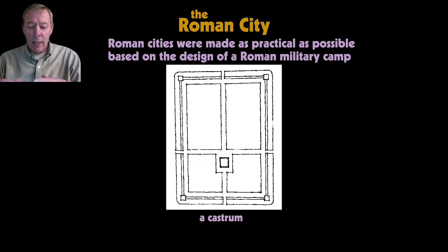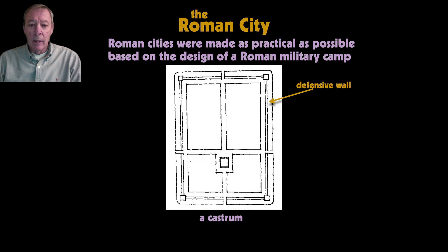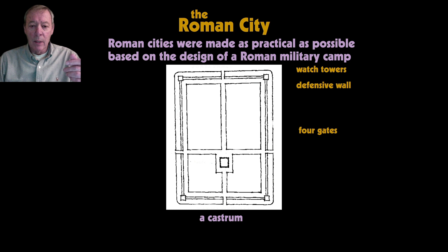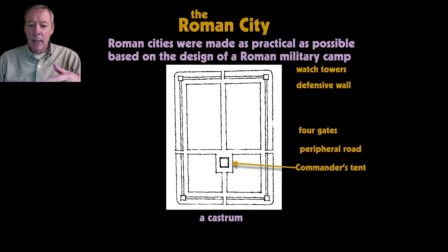Here we see the design of a so-called castrum. The elements of a castrum would be a defensive wall made of stakes—in the case of a military camp, each legionary would carry a bundle of stakes with him so they had the materials necessary to build the camp. It would consist of a defensive wall, watch towers at the four corners, and four gates coming in from each direction: north, south, east, and west.